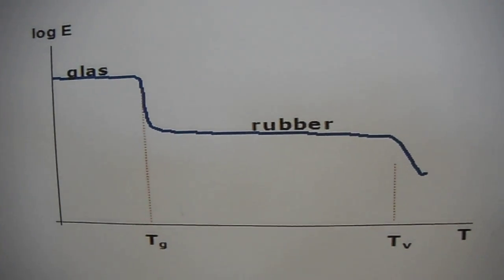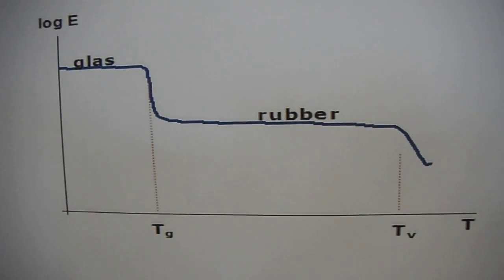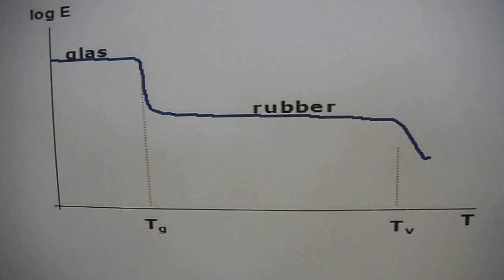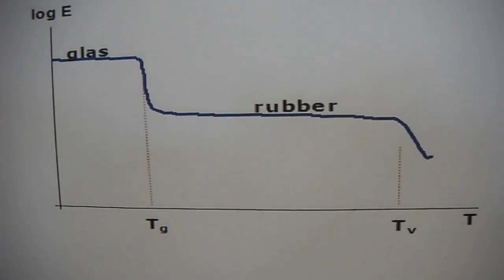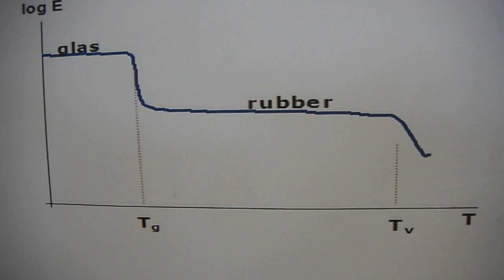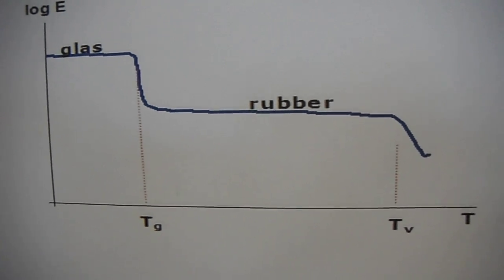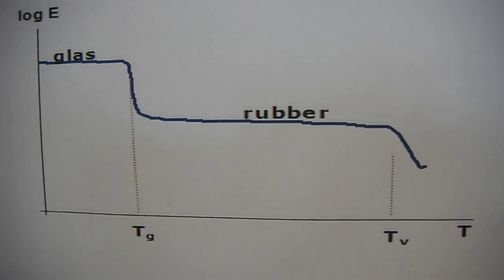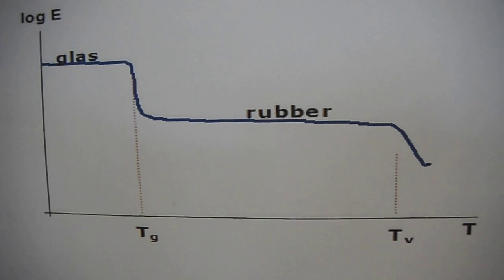In a rubber state, parts of the polymer chain can move opposite each other because their thermic energy is efficient enough to overcome the attractions between bonds. But the chains are still entangled, which means that they can't move relative to each other.